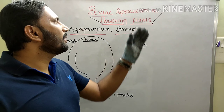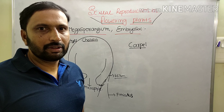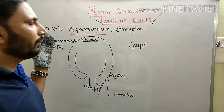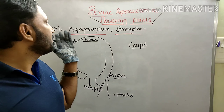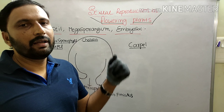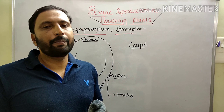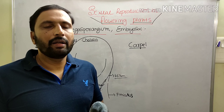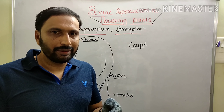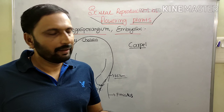Today our topic is sexual reproduction in flowering plants. The topic is Pistil, Megasporangium, and Embryo sac. We already discussed about the male reproductive organ — stamen, microsporophyll, microsporangium, and pollen grains.